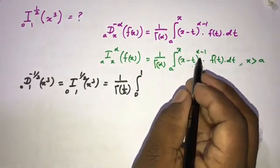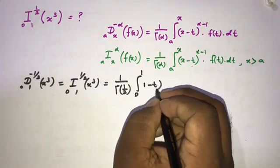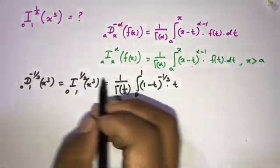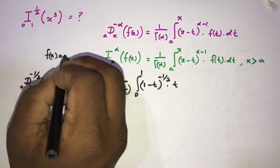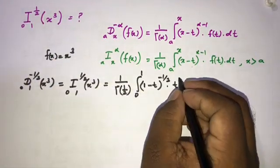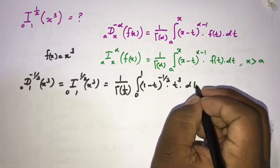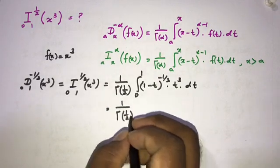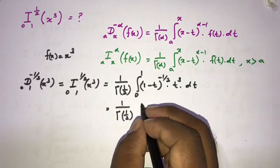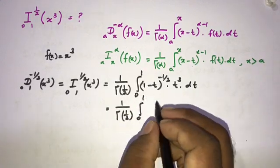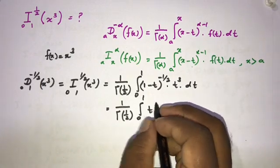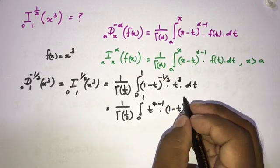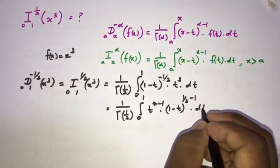Since x equals 1, we have (1 minus t) to the power (minus one-half). We know f of x equals x to the third power, so f of t equals t to the third power dt. Rewriting: 1 over gamma of one-half, integral from 0 to 1 of t to the (4 minus 1) times (1 minus t) to the (one-half minus 1) dt.